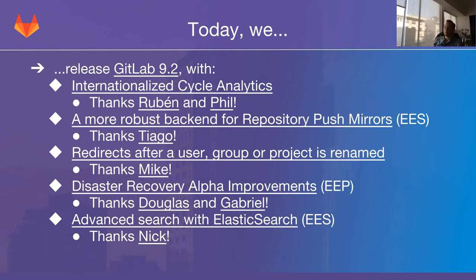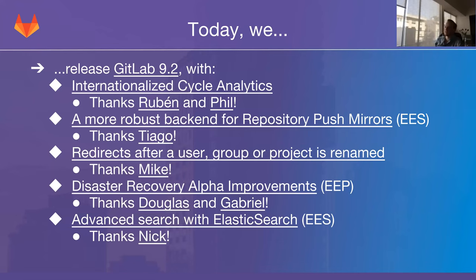Fifth, we have advanced search with Elasticsearch. If you have Elasticsearch enabled on your GitLab instance — available with Enterprise Edition Starter — you can use advanced search with AND, OR, and negation operators. Click the link for more detail. If you've been using Elasticsearch as an EE customer you'll likely have found that performance and update speed after a push has improved dramatically over the last couple of months, thanks to Nick and Valeria.